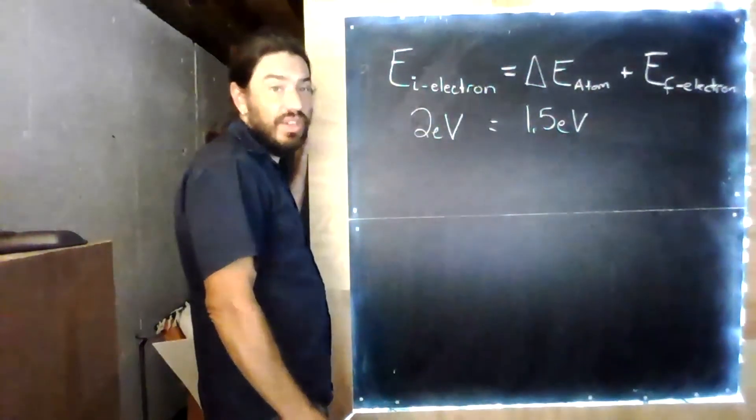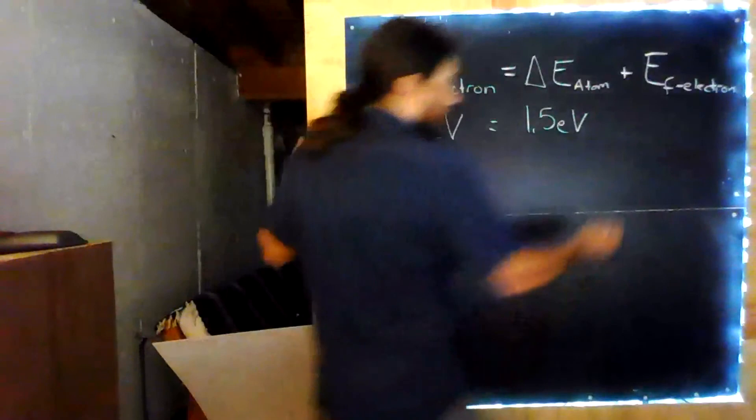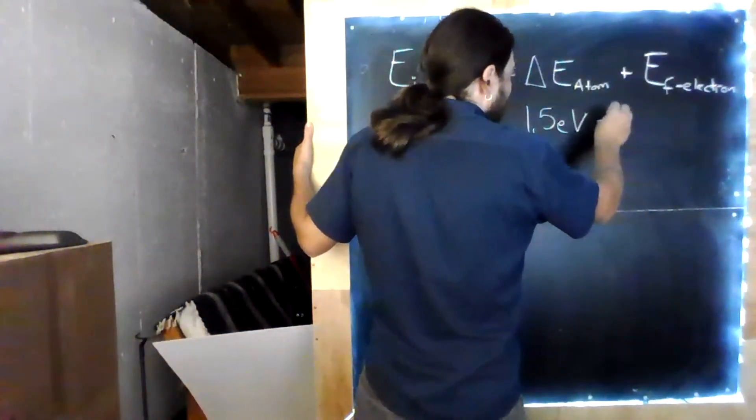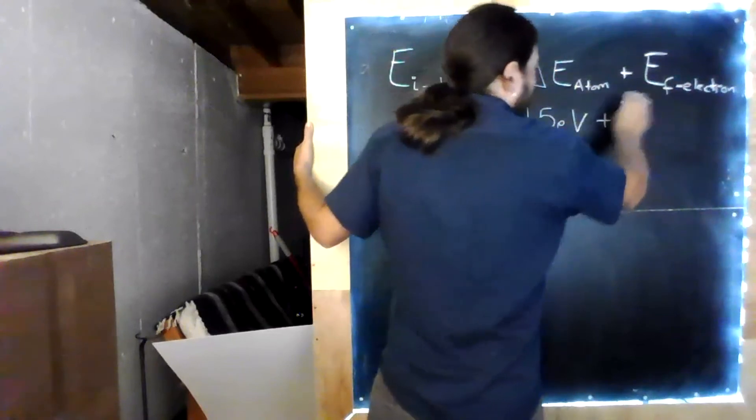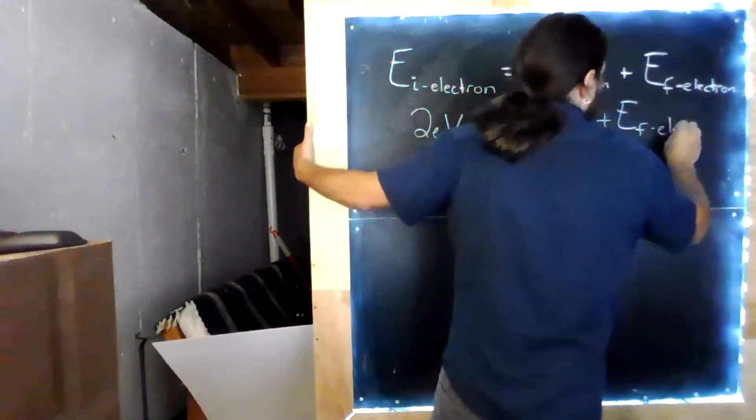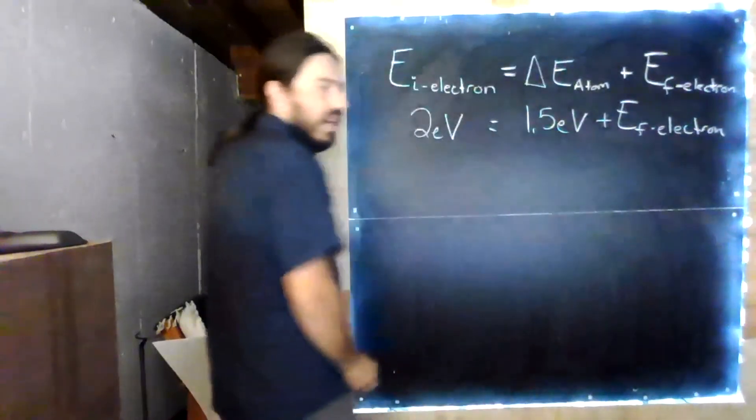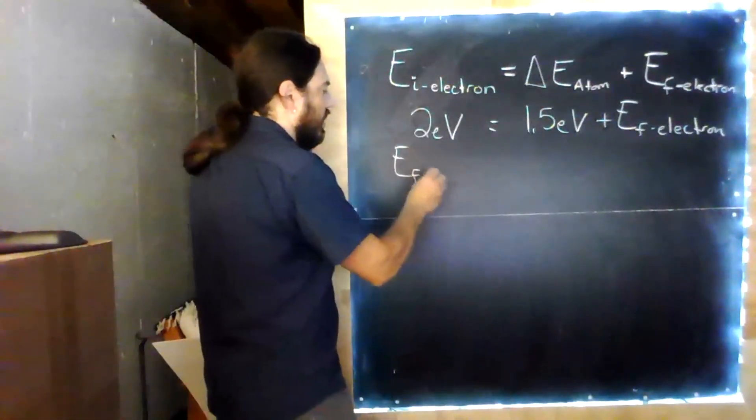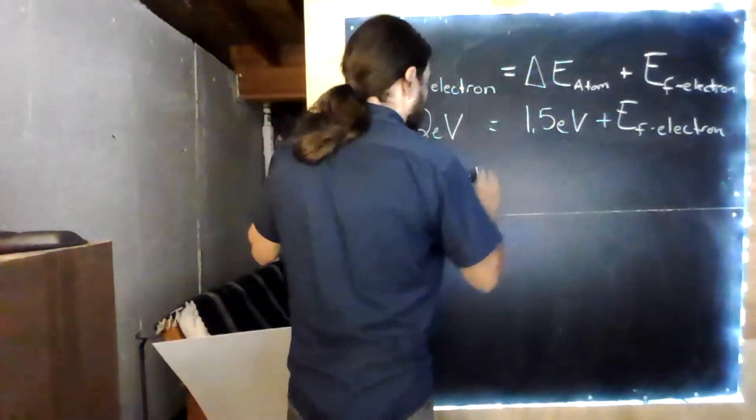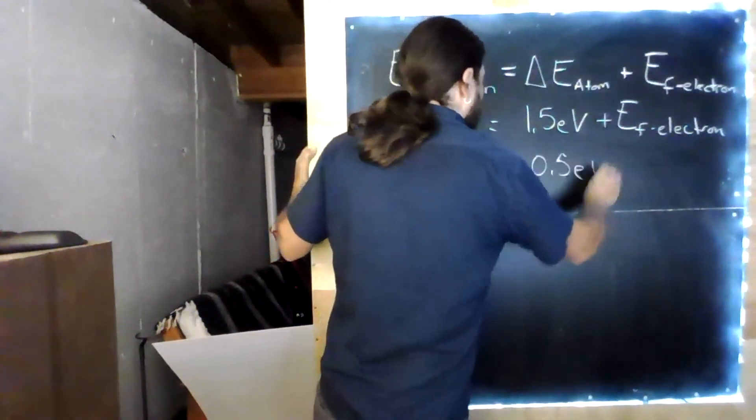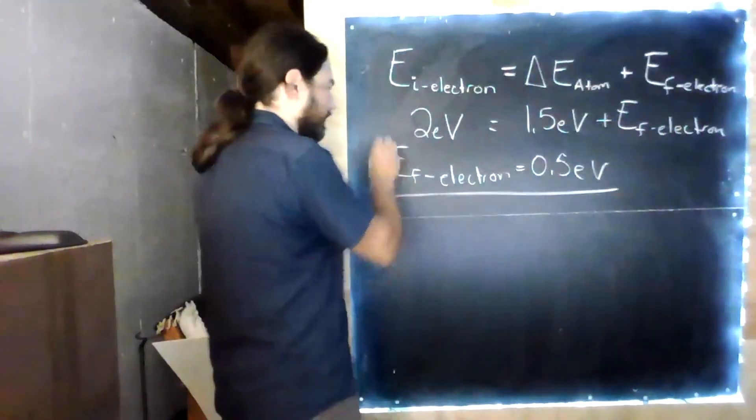Well, that means that we can solve for the final energy of the electron. So energy final of the electron equals 0.5 electron volts.